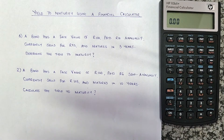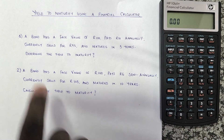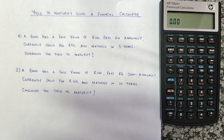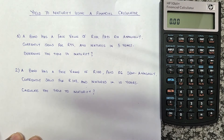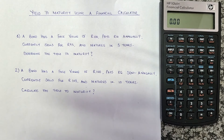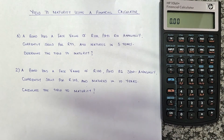Welcome to this lesson where we're going to be calculating the yield to maturity using the financial calculator HP 10B2 Plus. We have done these same examples using the formula — you'll find the link to that lesson in the description below. In that same lesson we also calculated the yield to maturity using Excel. We've also done other lessons using the same financial calculator; you'll find the links in the description below.